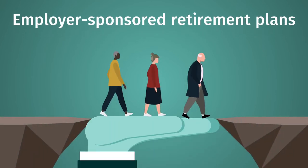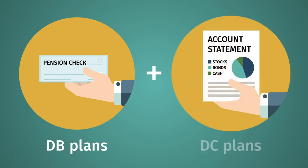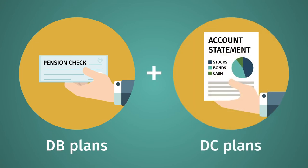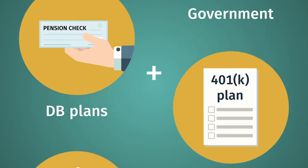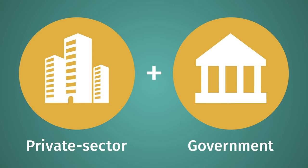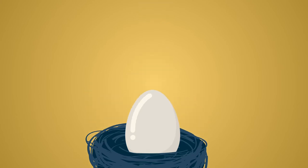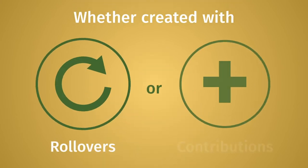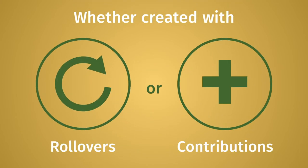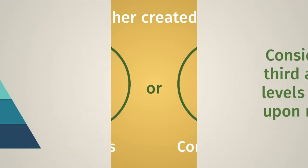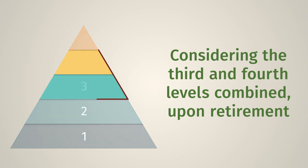The third level is employer-sponsored retirement plans. These include defined benefit and defined contribution plans, such as a 401(k), from both private sector and government employers. The fourth level is IRAs, whether created with rollovers or contributions.